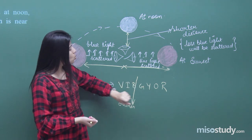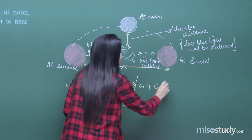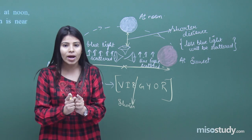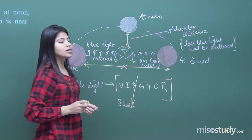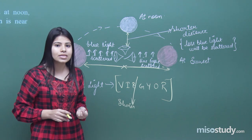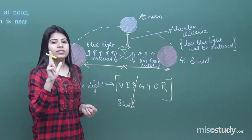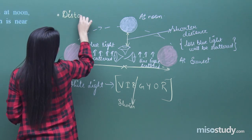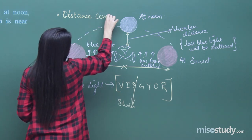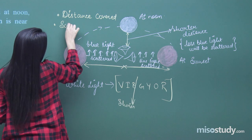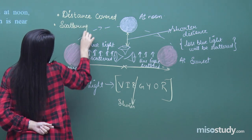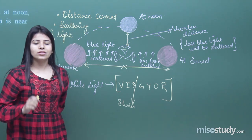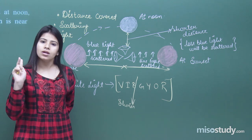When the blue and shorter-wavelength lights are scattered away, you are left with only the larger-wavelength light, which is red. That is why the sky and surrounding area appear red in colour at sunset. The two key points are: the distance covered while travelling and the scattering of light due to the atmosphere.